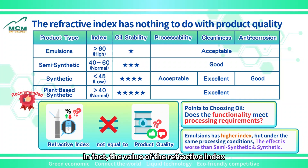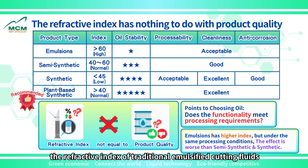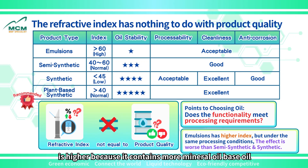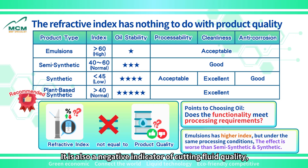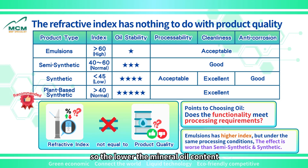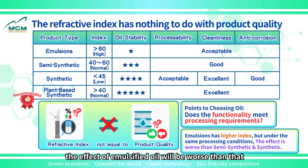In fact, the value of the refractive index does not equal the quality of the product. For example, the refractive index of traditional emulsified cutting fluids is higher because it contains more mineral oil base oil, but the lubricity of mineral oil is poor. It is also a negative indicator of cutting fluid quality, so the lower the mineral oil content, the more stable the quality of the cutting fluid. Under the same processing conditions, the effect of emulsified oil will be worse than that of semi-synthetic and fully synthetic oils.